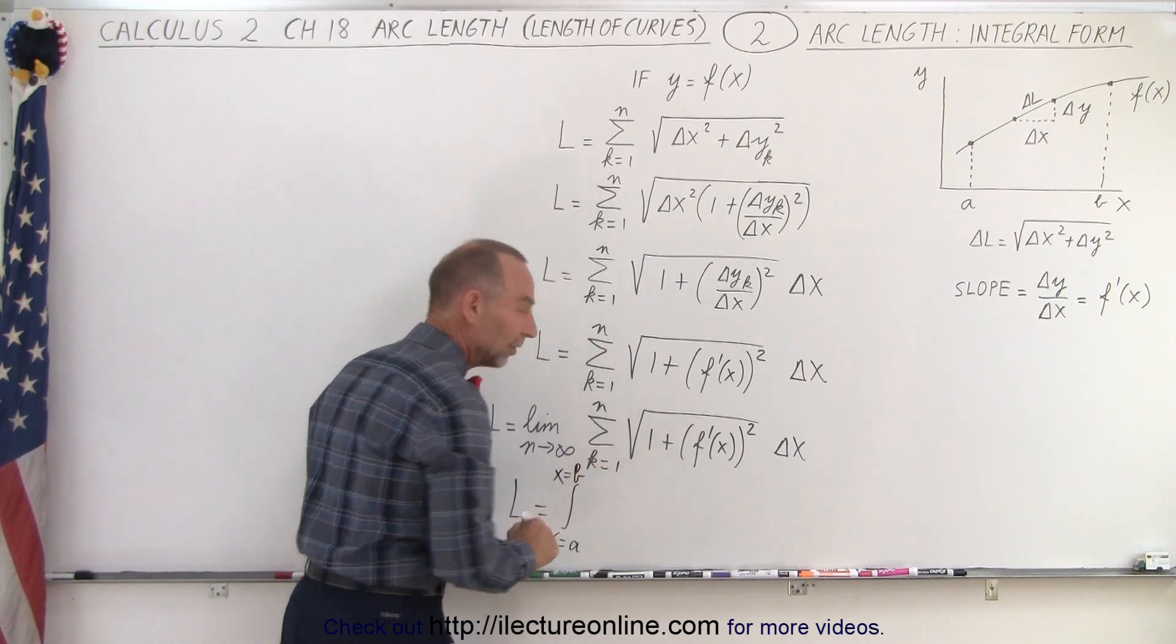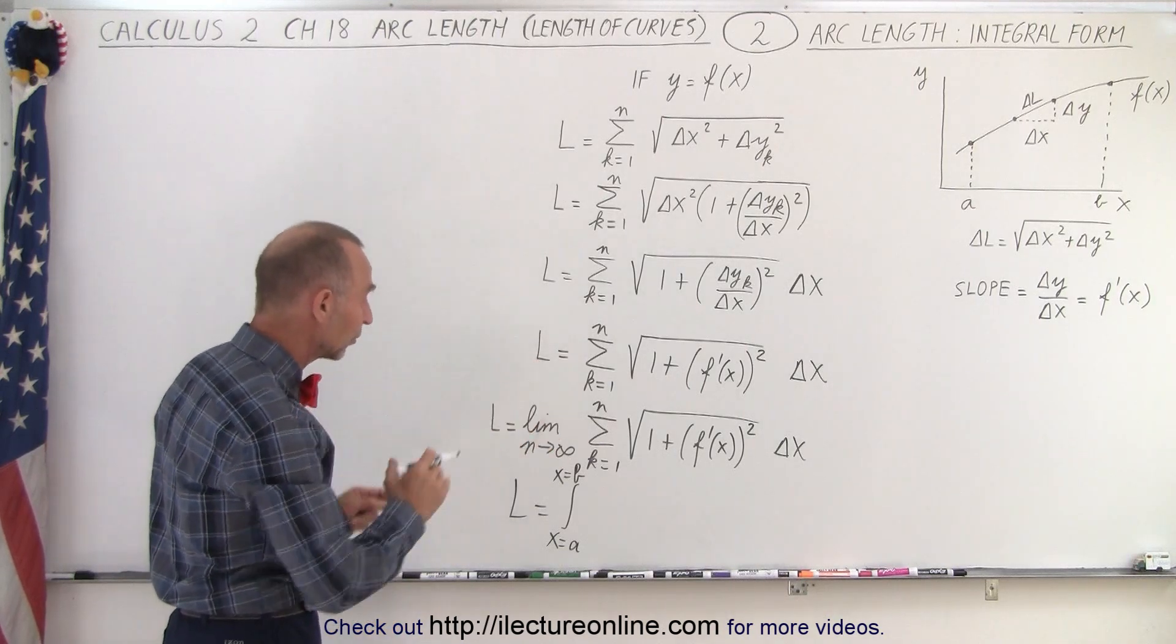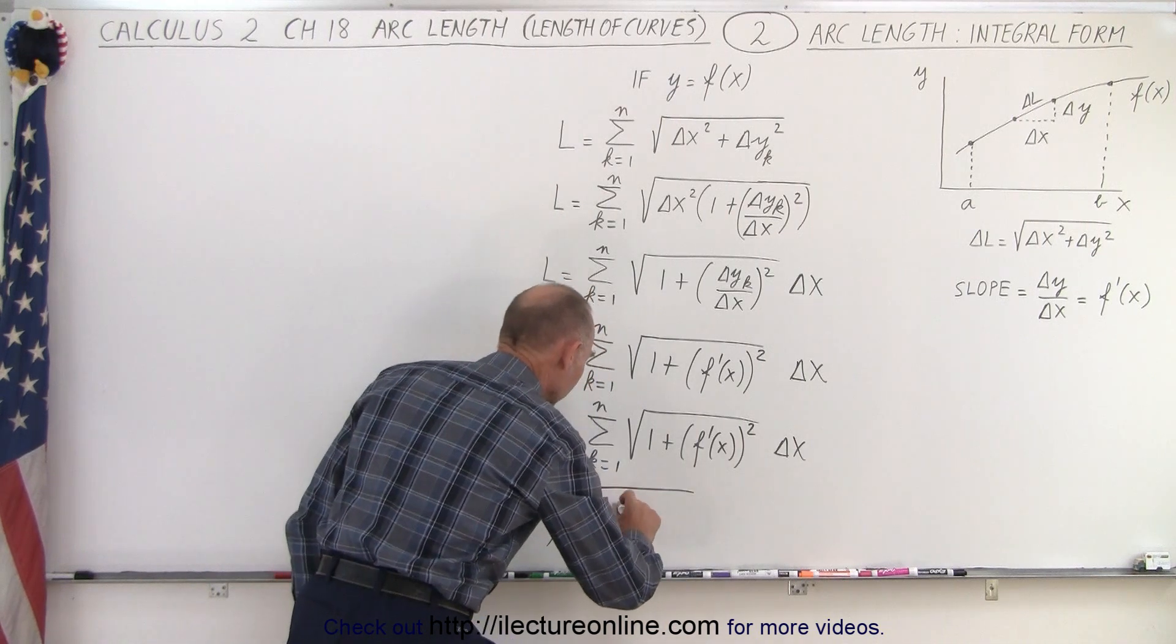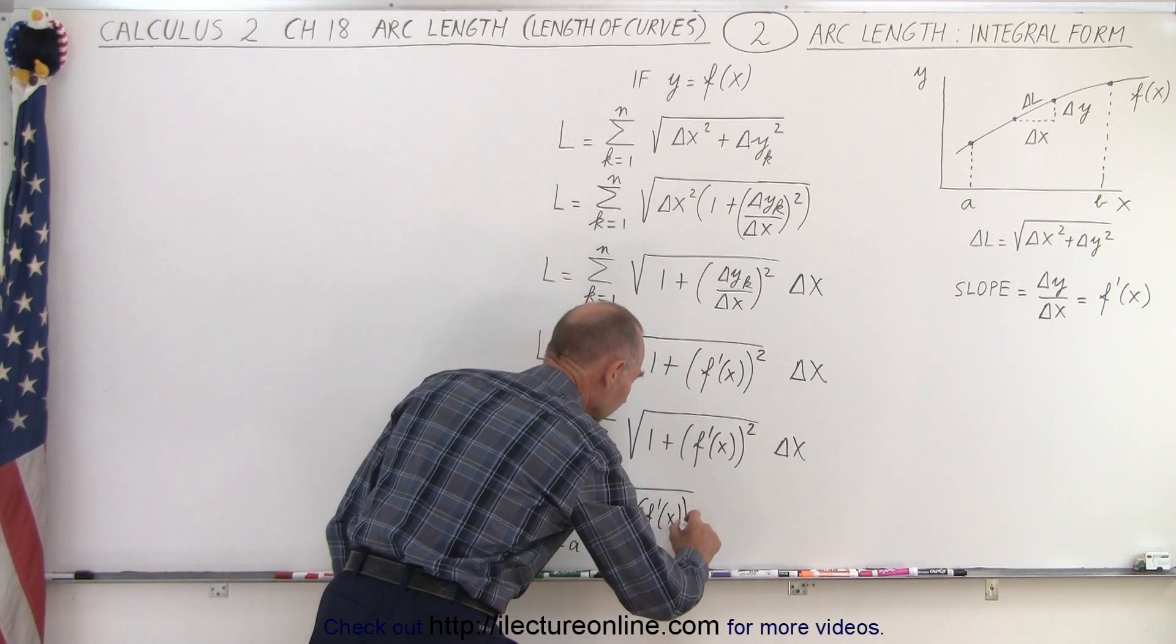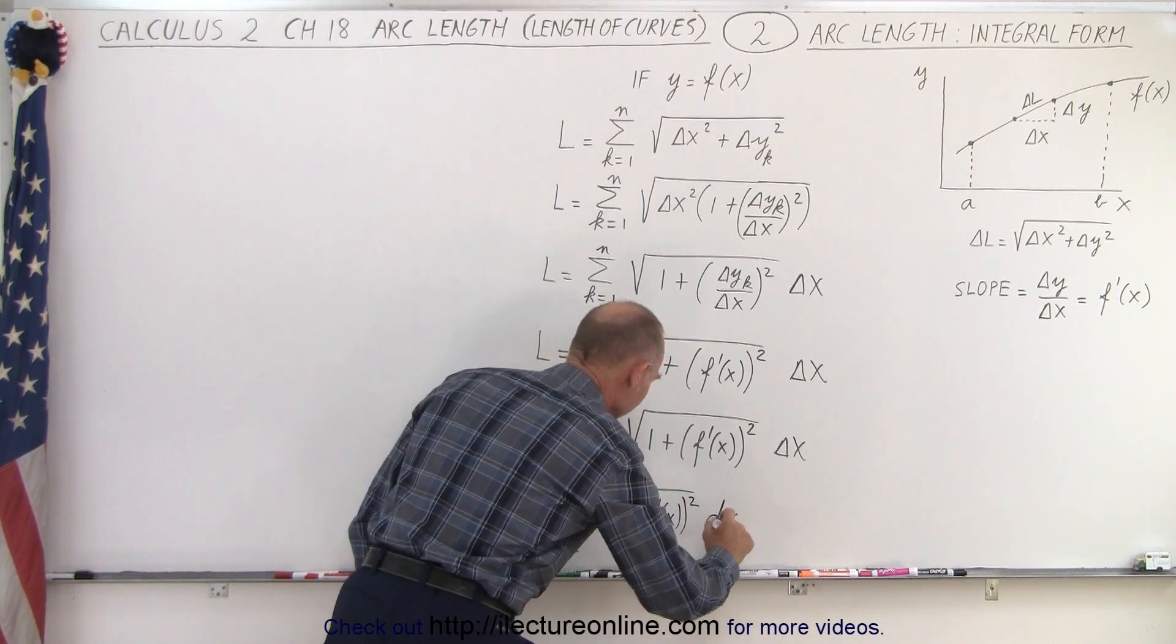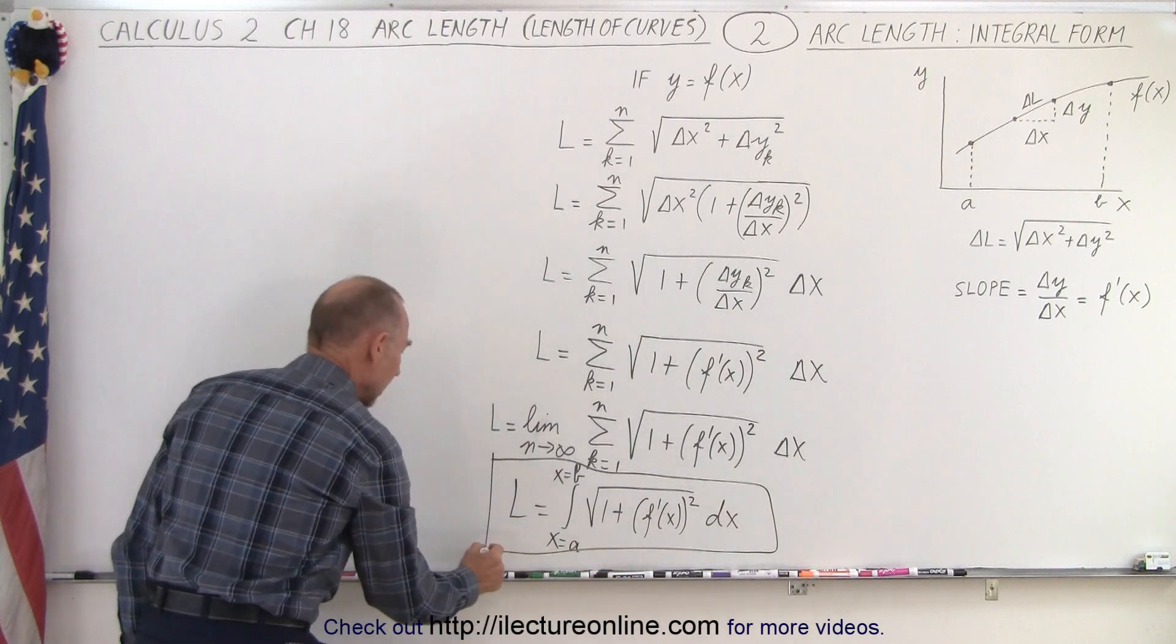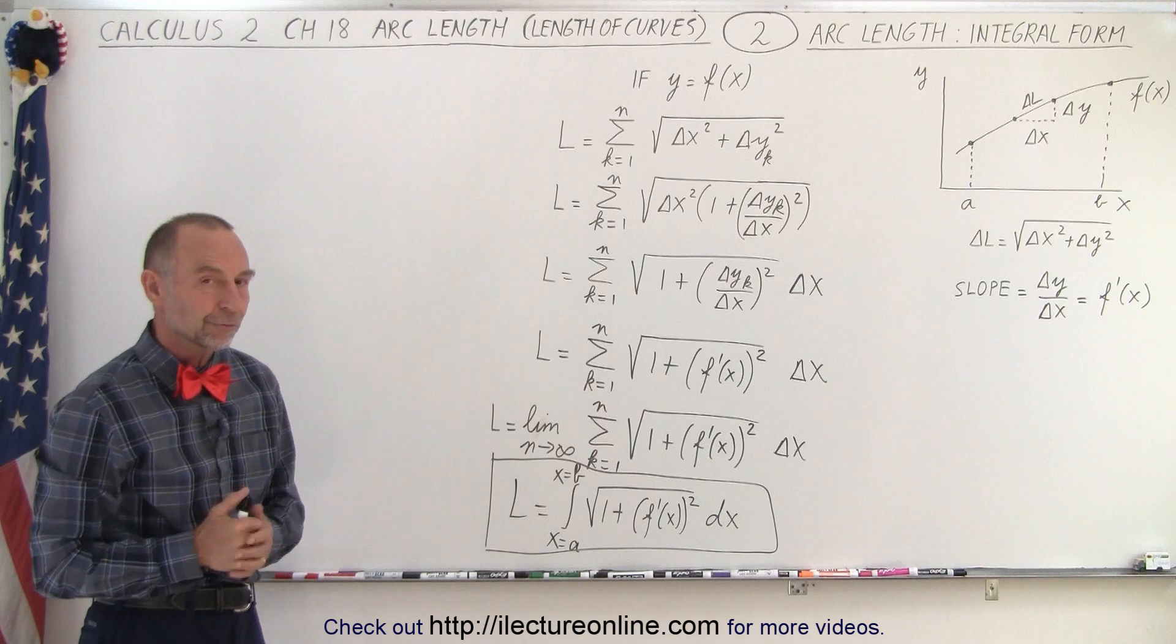Now, normally they don't write x there, so it's not always understood. It's simply from the xa to x equals b limits of the square root of 1 plus the functions, the derivative of the function squared, times dx. And this then becomes the integral form for finding the arc length of any curve.